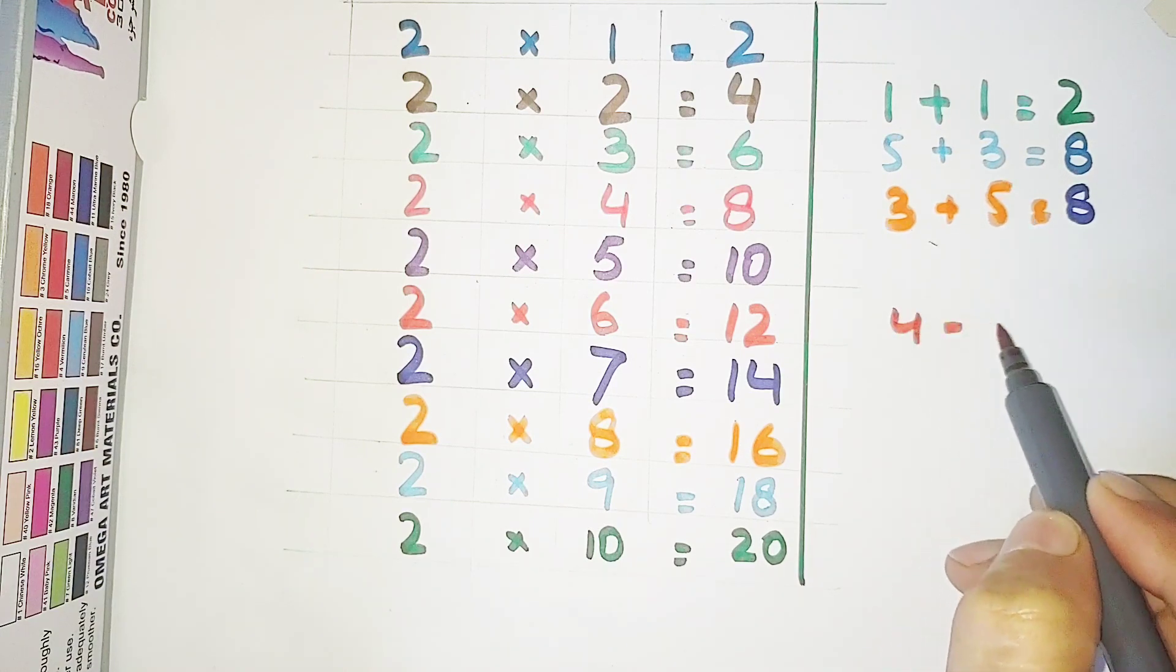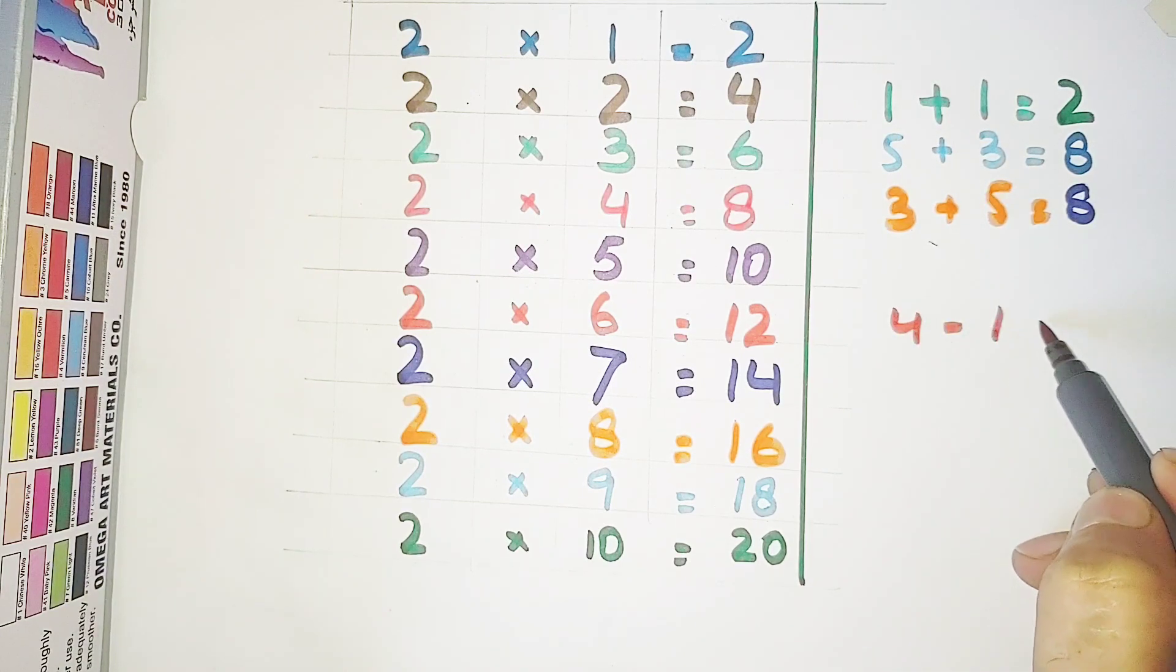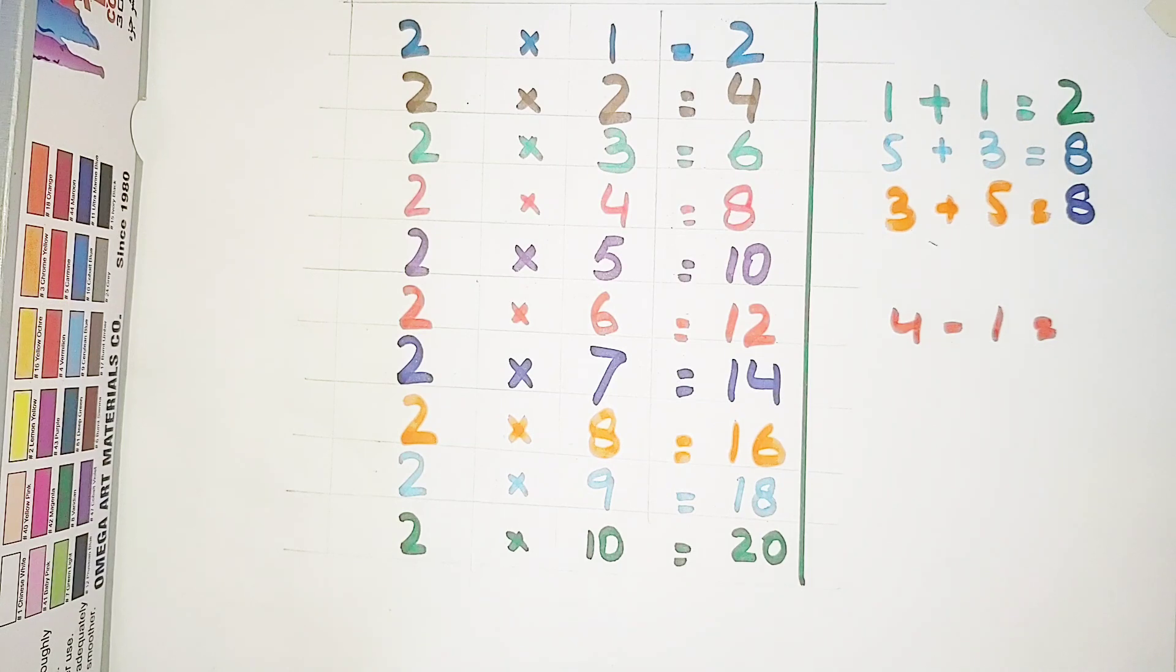4 minus 1, how much? 4 minus 1 is 3. Very very good.